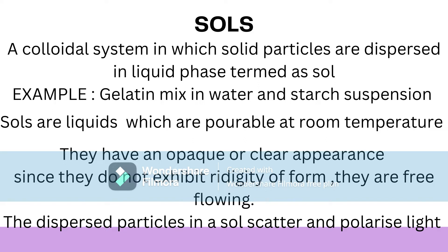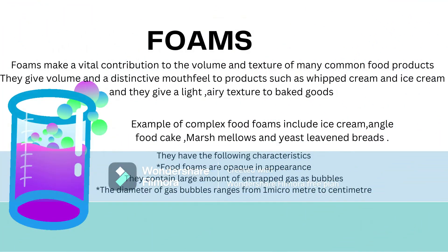Being colloidal, sols exhibit some characteristic properties. Sols are liquids which are pourable at room temperature. They have an opaque or clear appearance and, since they do not exhibit rigidity of form, they are free-flowing. The dispersed particles in a sol scatter and polarize light. Colloidal particles in a sol also exhibit rapid, irregular movement. Sol particles have a similar charge on their surface so they do not coalesce and they repel each other.